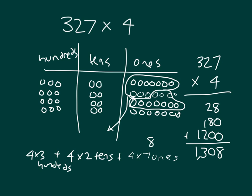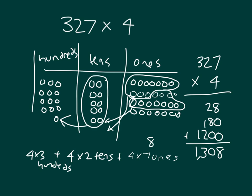We regrouped two sets of ten, so we make two more in the tens place. Now we have ten of them in the tens place, and we can regroup it over to the hundreds. In the hundreds place I have thirteen of them, and I can take those and regroup them to the thousands place. That gives us one thousand, three hundred, zero tens, and eight ones — one thousand three hundred eight.